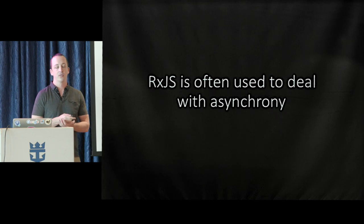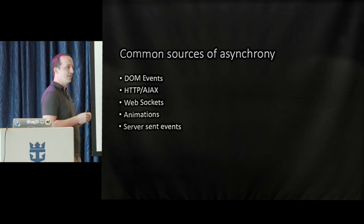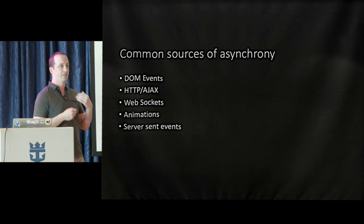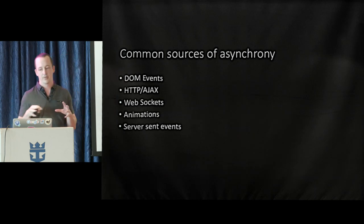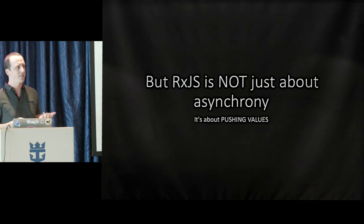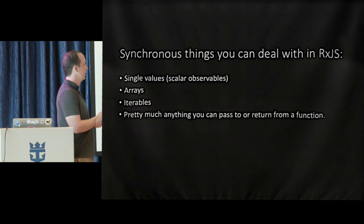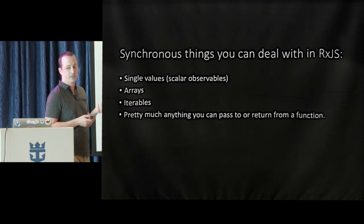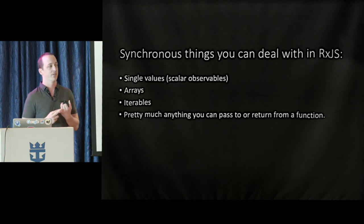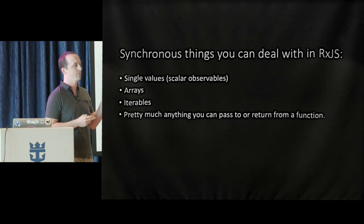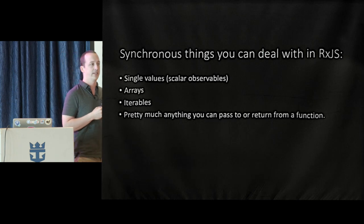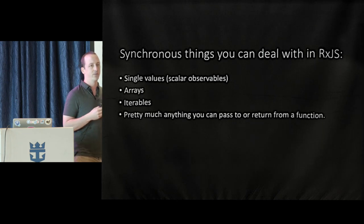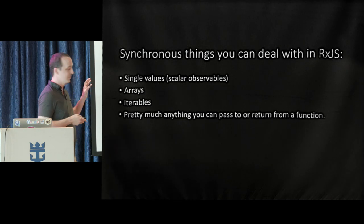RxJS is often used to deal with asynchrony, and the types of asynchrony you'll see are things like DOM events, AJAX, web sockets, animations, server-sent events, et cetera. That's the common list of things you see RxJS built around. But it's not just about asynchrony — it's about pushing values. There are synchronous things you can deal with in RxJS, things like single scalar values, arrays, or you could get every value out of an iterable synchronously. Pretty much anything you can get a handle to in memory or make a call and get synchronously, you can push out of an observable.